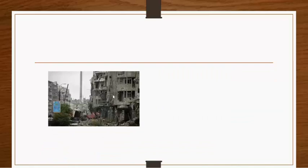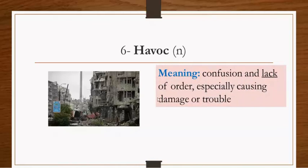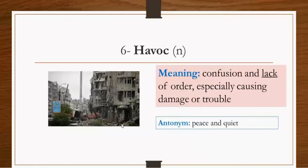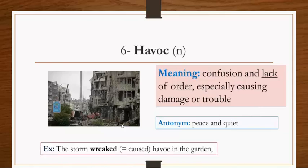If you look at this picture, you're going to find much mess. When you think about much mess like this, it's called havoc. Havoc is a noun meaning confusion and lack of order, especially causing damage or trouble or destruction. The antonym is peace and quiet, without fighting, without destruction. Intact means without any destruction. Example: The storm wrecked, causing havoc in the garden, great destruction.